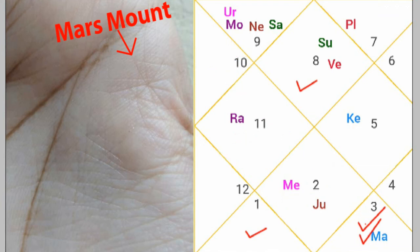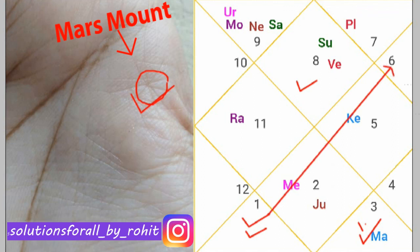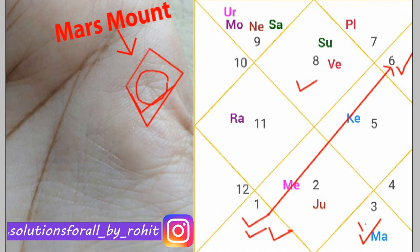Mars' third drishti is on the third house, which is the exalted drishti of Mars, but this will also not give good results as the third house represents hard work. So it is clear that the 8-headed star sign gives both positive and negative kinds of results. In both horoscopes, Mars is the lord of the sixth house and makes a relation with the eleventh house, which is the income and profit house. The star sign gives income and profit through the connection of the sixth house and eleventh house in the horoscope.